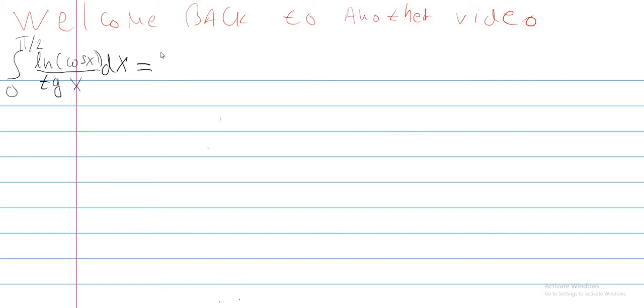Since we have ln of cosine of x, let's get rid of that ln. Let's introduce a substitution: cosine of x equals e to the minus y. When we differentiate both sides, we get this expression, and minuses cancel each other out, and we get that dx is e to the minus y over sine of x dy.